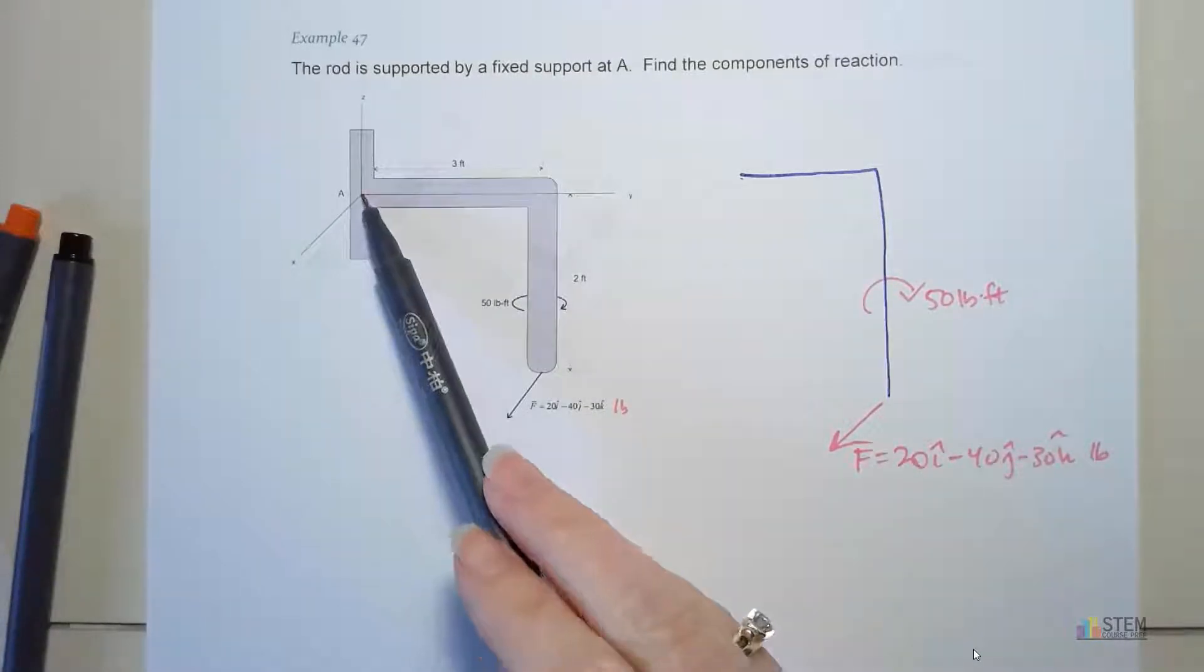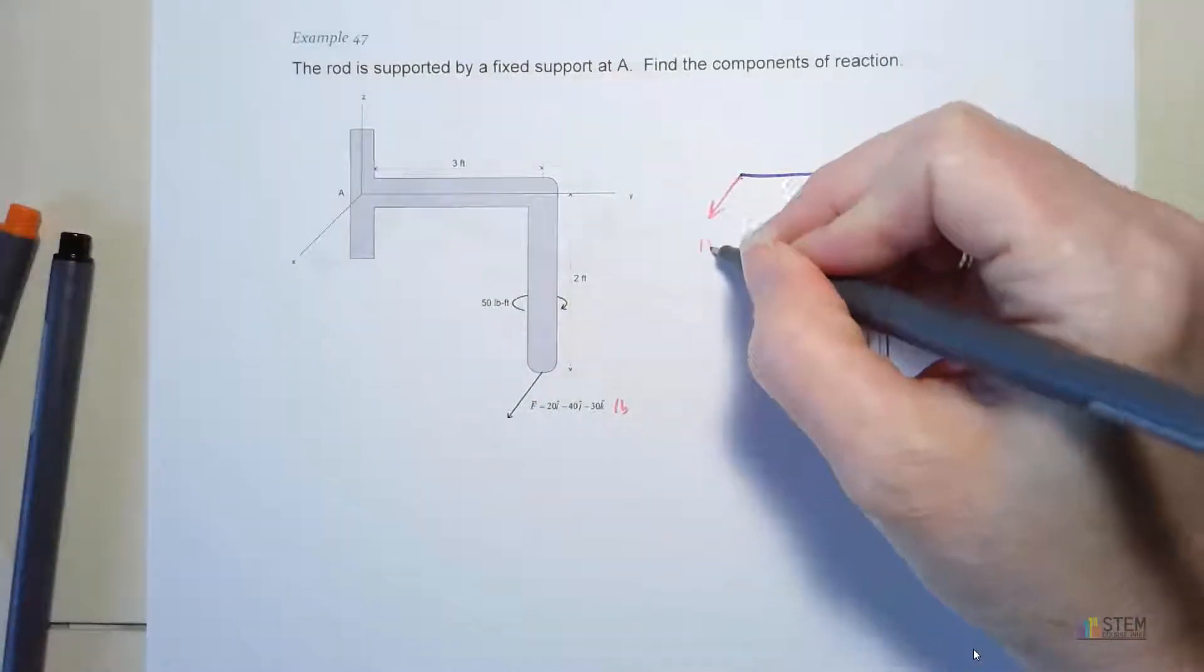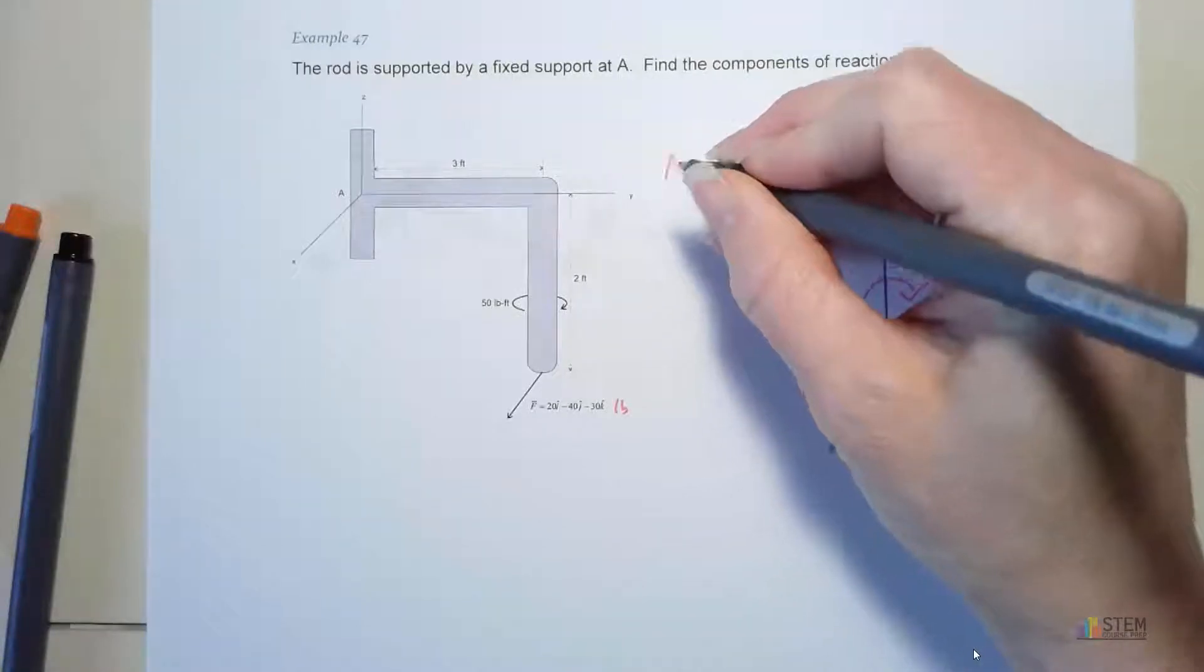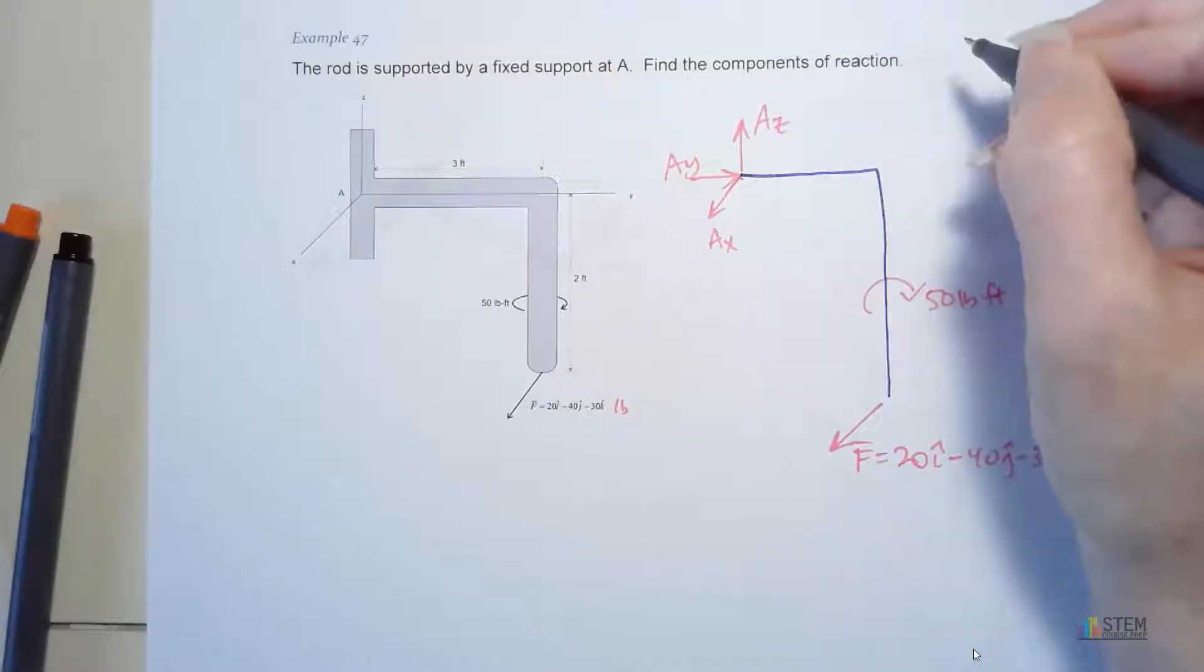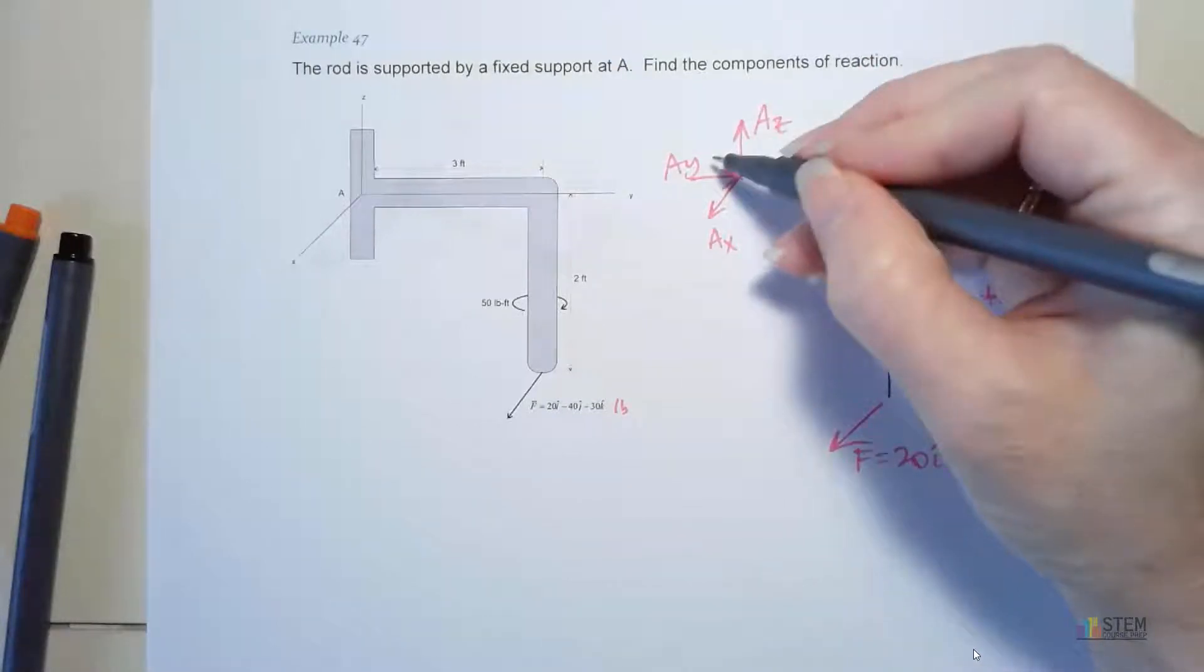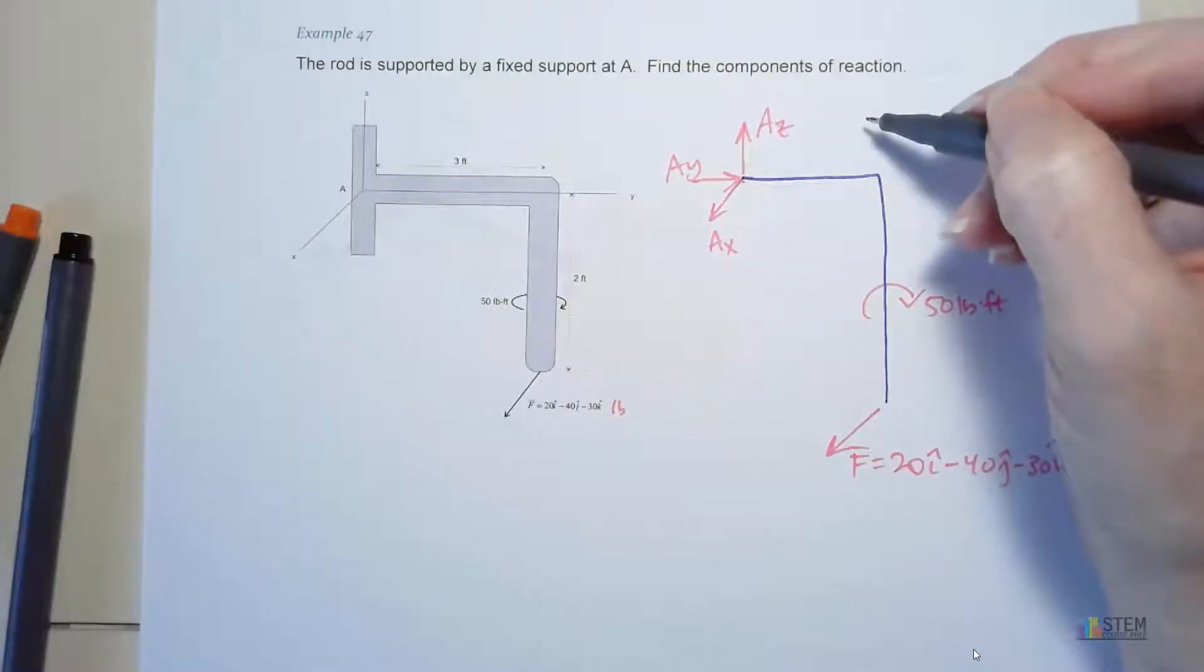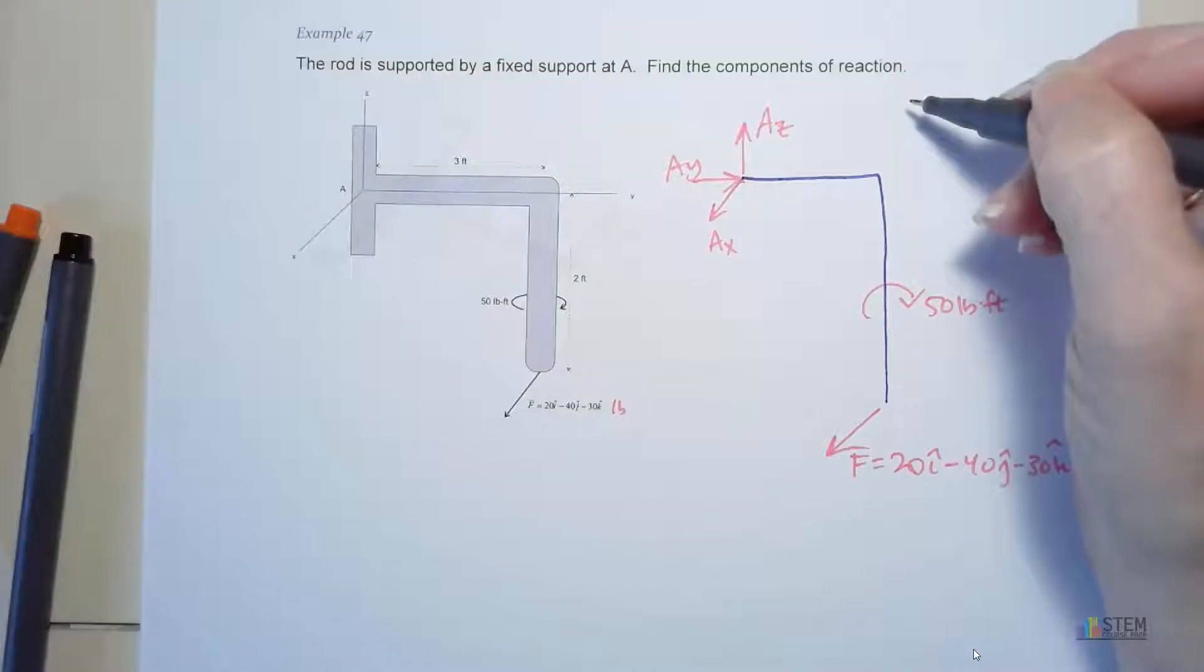Let's assume those are all fixed supports where they don't move at all. So no translation, no rotation. That means the fixed support has to provide three forces, one in each direction, to prevent the translation. So that gives us our AX, AY, and AZ. I'm just assuming these positive directions. They might not be drawn correctly, but that's okay. Just assume a direction. These three things prevent the translation.